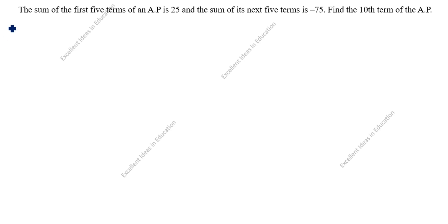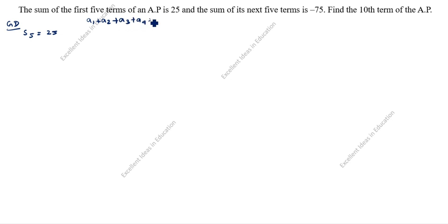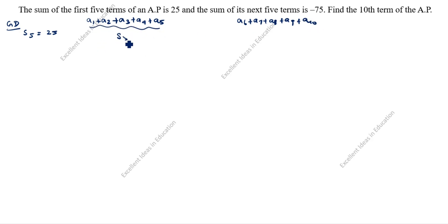Given data: Sum of the first five terms is S5 equal to 25. The sum of its next five terms — how do we write 'next five terms'? The first five terms are A1 plus A2 plus A3 plus A4 plus A5. Next means after A5, so the next five terms start with A6 plus A7 plus A8 plus A9 plus A10.